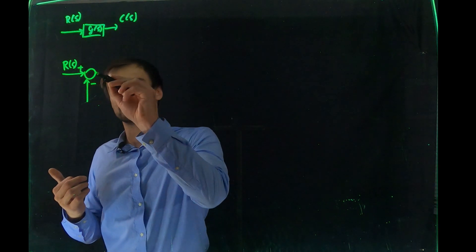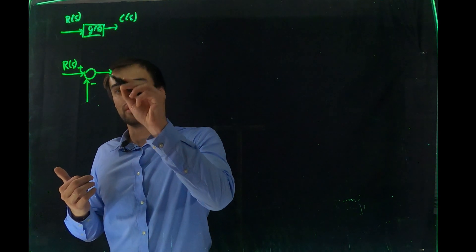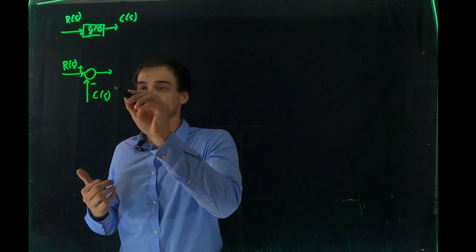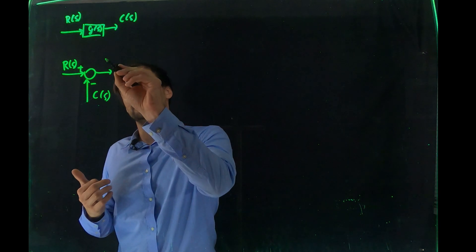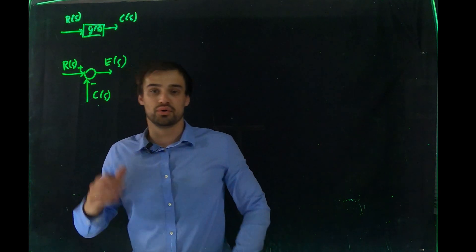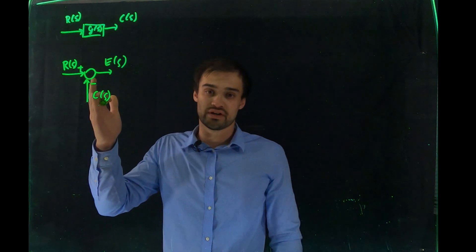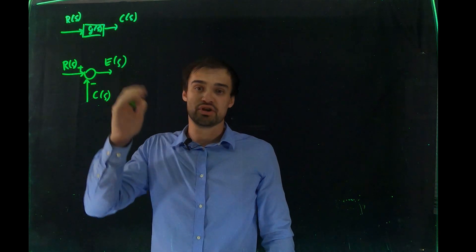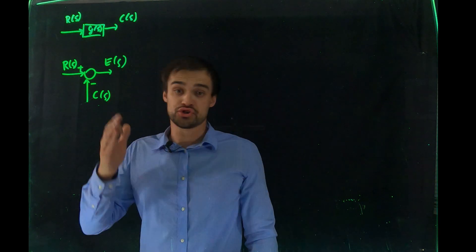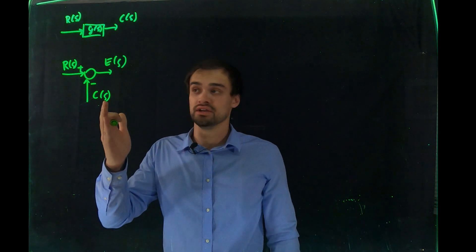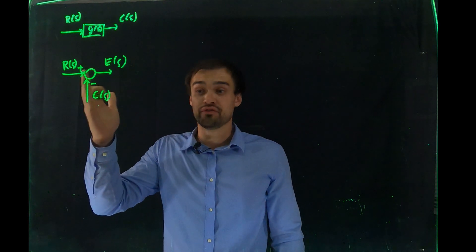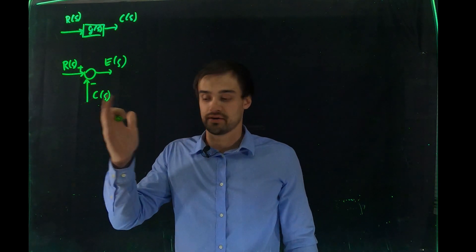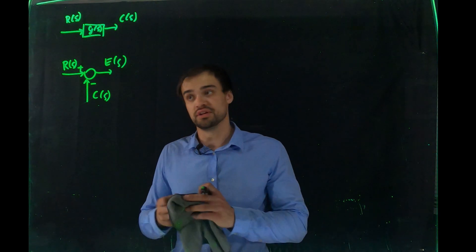The error detector node has a signal coming back with a minus sign and a reference signal with a plus sign. This is mainly used for feedback control. For instance, you have R(S) and the error between the reference and the signal coming back C(S) is E(S), so R(S) minus C(S) equals E(S). It shows the difference between the reference signal and the actual signal.